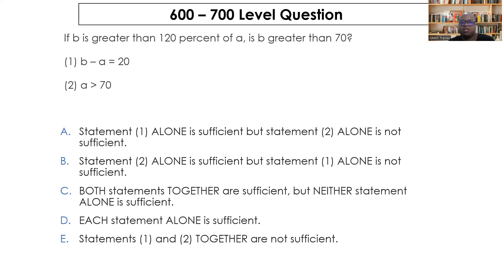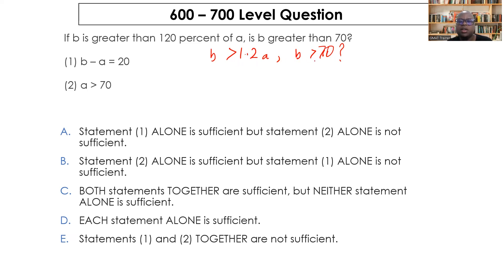One more question: if b is greater than 120% of a — that is b > 1.2a — is b greater than 70? This looks like an inequality but is actually a percentages problem. The condition requires b/a > 1.2 and we need to determine if b > 70 consistently.